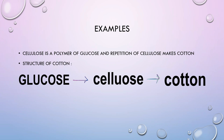Here you can see cellulose is a polymer, and glucose repeating is cellulose — cellulose is cotton. So glucose is the monomer, cellulose is the polymer, and cellulose's product is cotton. This is a very common example you can state if asked to give an example of a polymer, monomer, and polymerization.